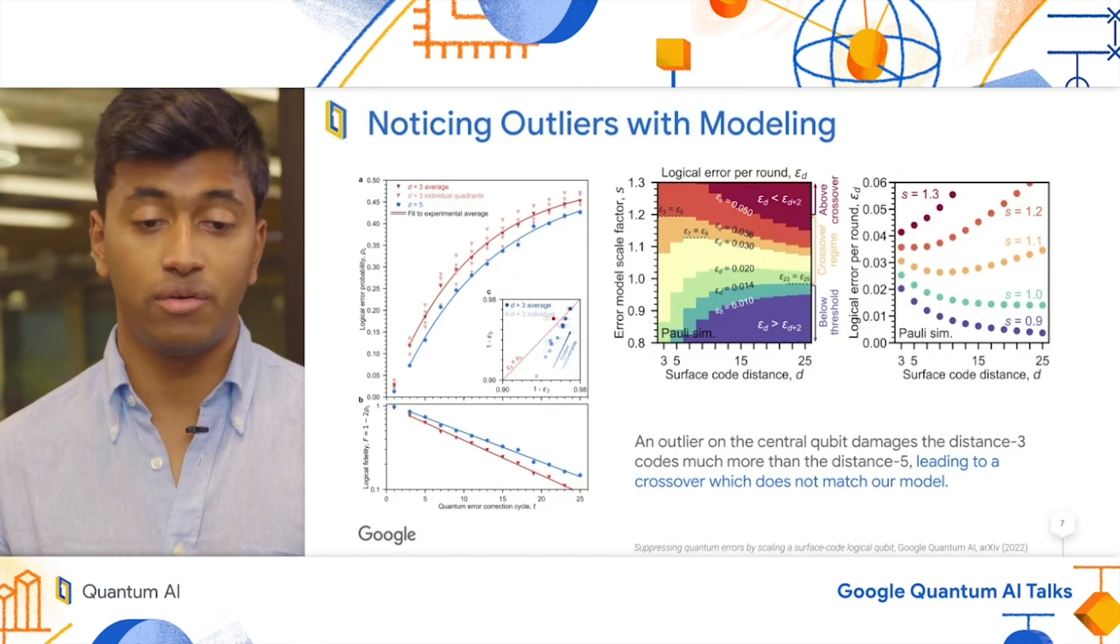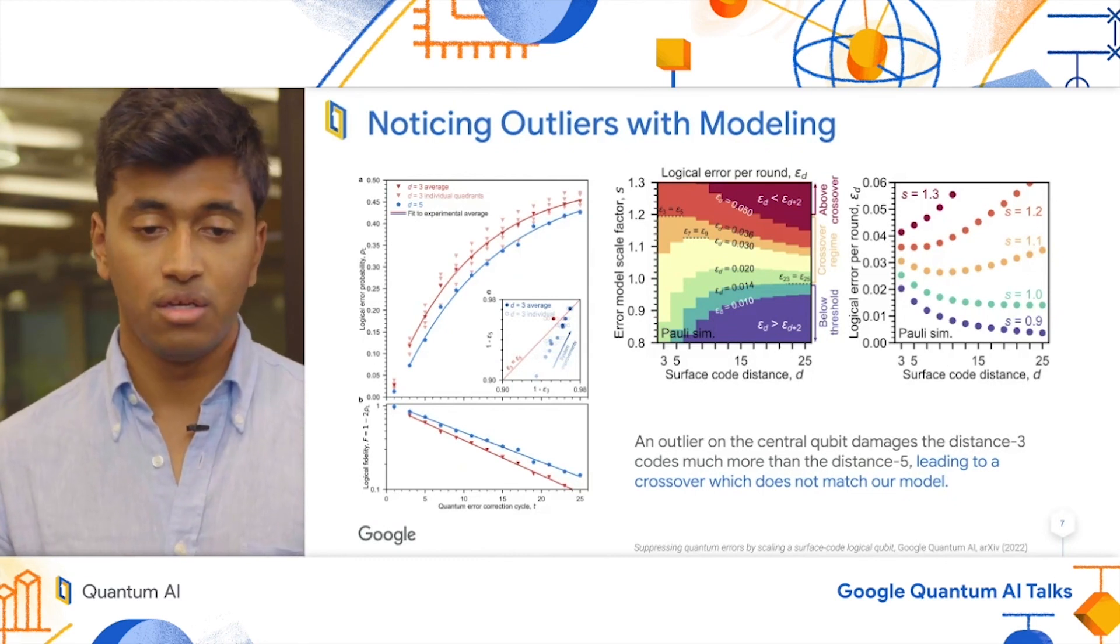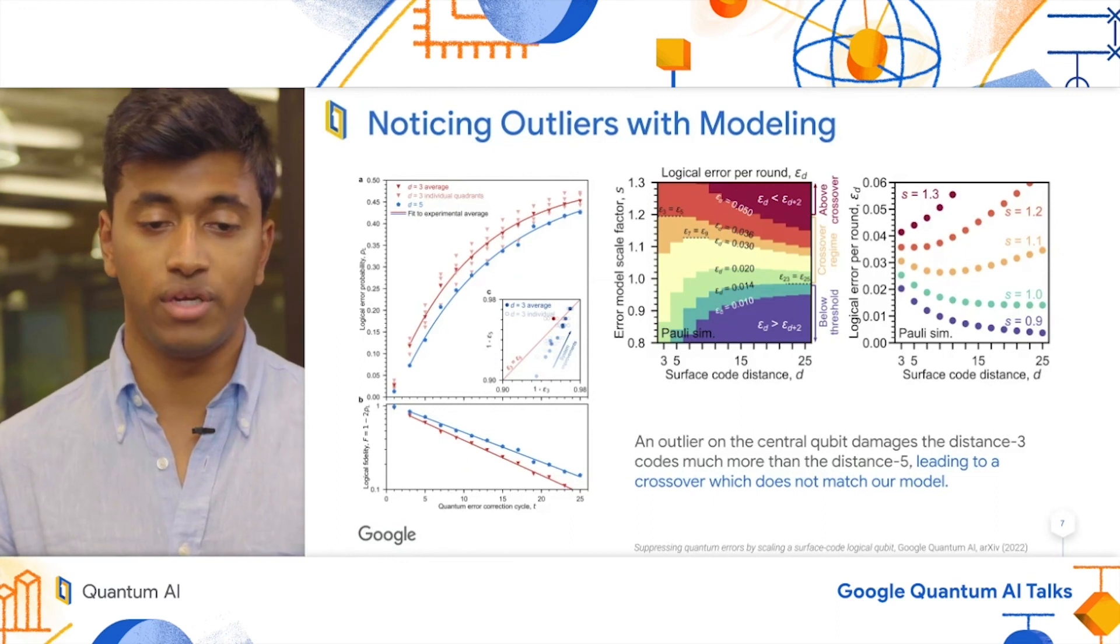It was happening at a logical error rate of around five or six percent. And if you look at the inset, you can see this crossing in red is dramatically over the crossover point, but does not match the general trend of the rest of the data points.